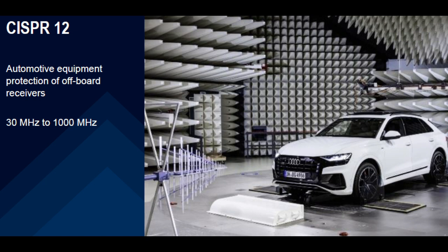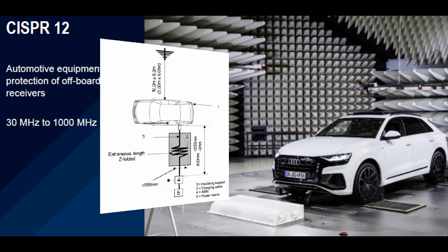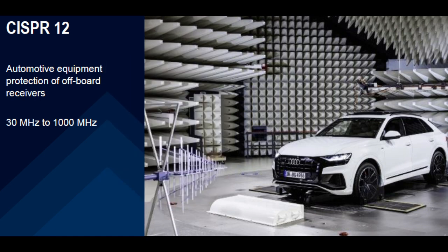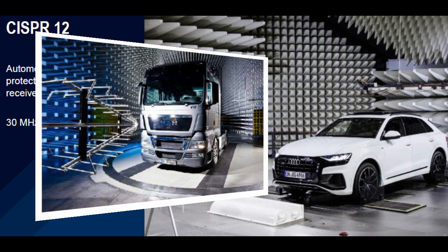CISPR 12 is the standard for automotive equipment — specifically the protection of off-board receivers in the frequency range 30 MHz to 1 GHz. Both broadband and narrowband Class B emission limits are given at 3 or 10 meter distance, measured on an outdoor test site or within an anechoic shielded room with a fixed antenna height. CISPR 12 applies to vehicles and boats driven by internal combustion engines or electrically, and covers whole vehicle testing intended to protect radio reception away from the vehicle.